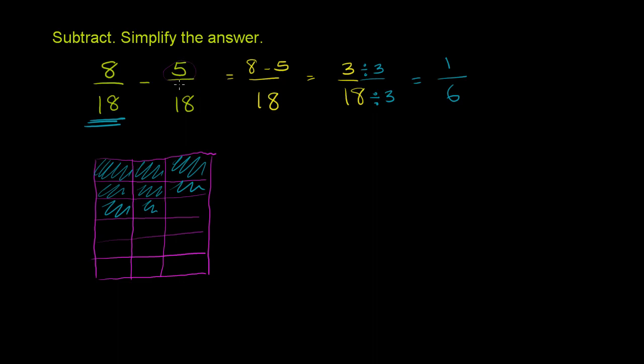And now we want to subtract 5 of the 18ths. So we subtract 1, 2, 3, 4, 5. Now what do we have left over? Well, we have 3 of the 18ths left over.